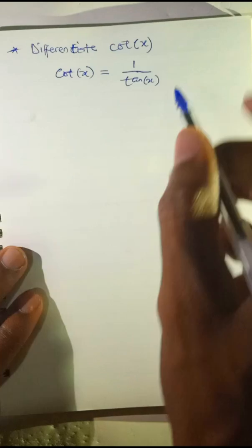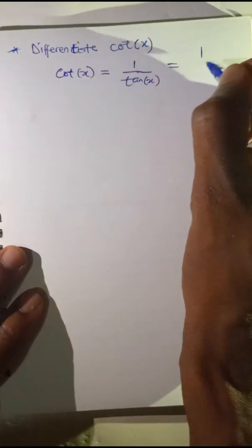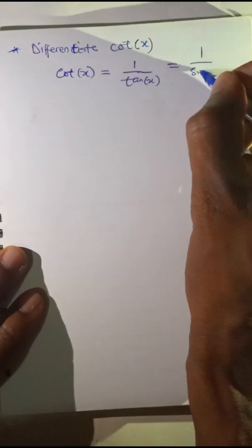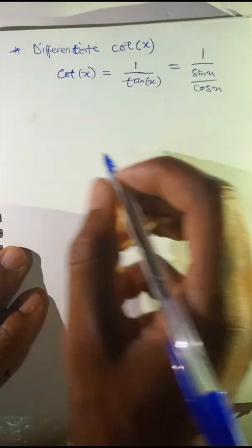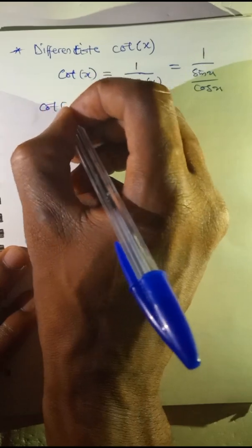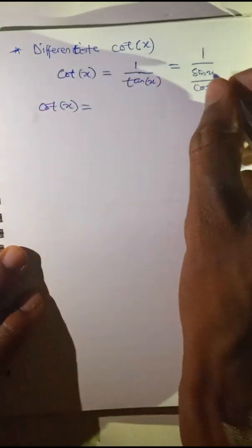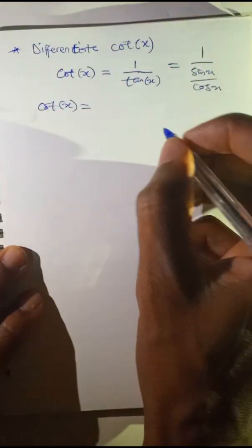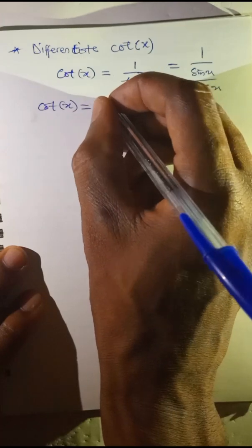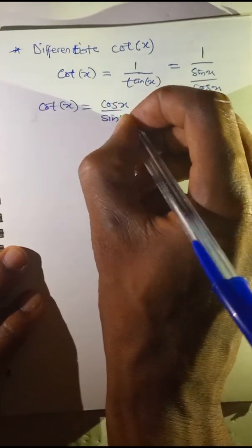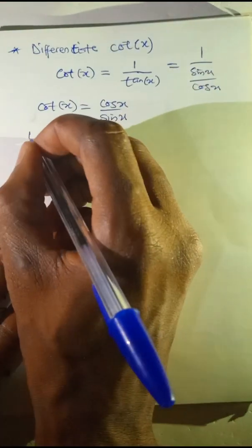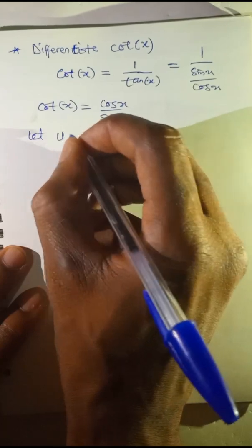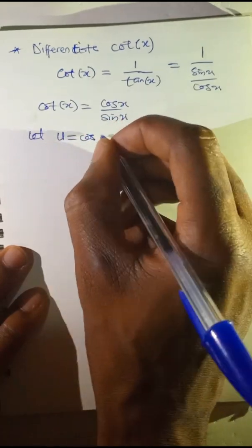Tangent of x is sine x over cos x. Therefore cotangent of x, taking the reciprocal, equals cos x over sine x. Using the quotient rule, let u equal cos x, the numerator.